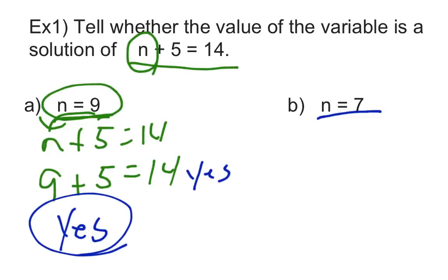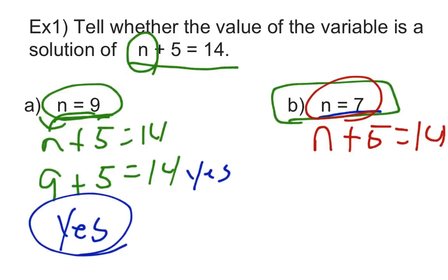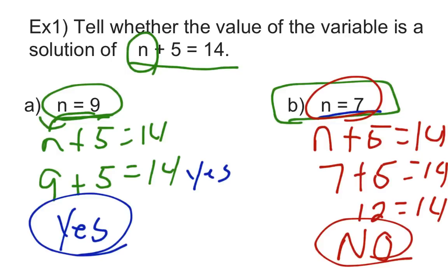I think we can kind of tell here then for the second one, when we do b, that n equals 7. Again, we're going to test this out. Our equation here is n plus 5 equals 14 again. But now they're asking us, is 7 an answer? So we're going to plug 7 in. 7 plus 5, and they're saying, does that equal 14? And hopefully we know that actually 7 plus 5 equals 12. And since 12 isn't the same as 14, it's supposed to equal 14. It doesn't. So we're saying, no, part B, this one's not an answer.